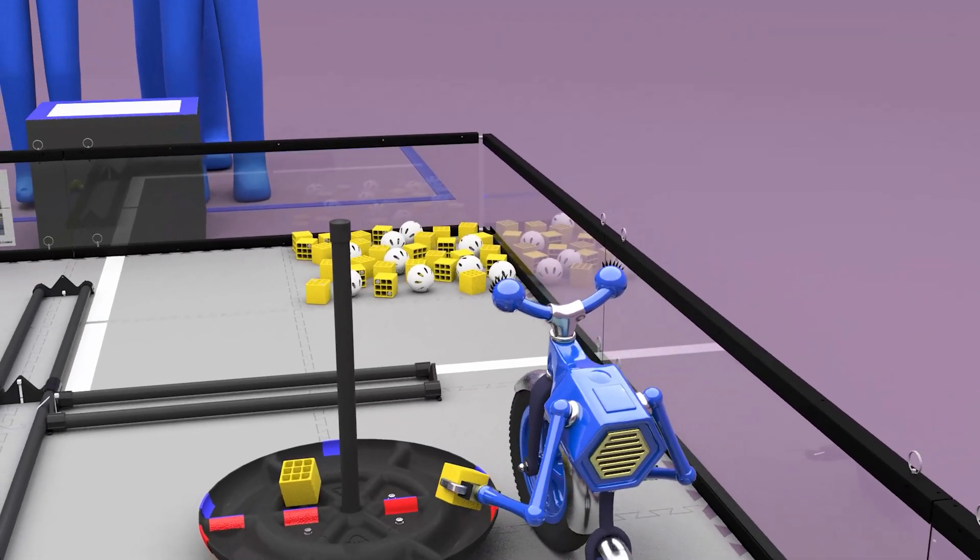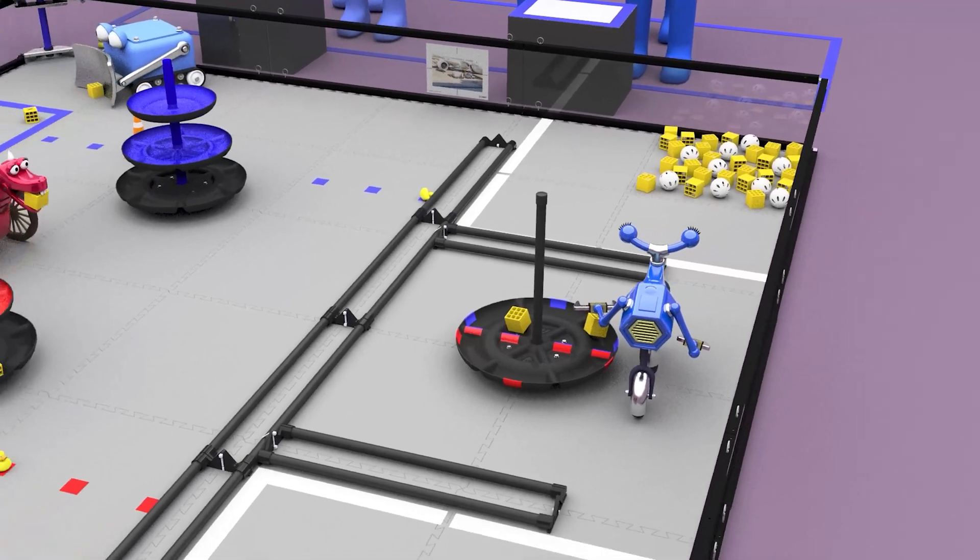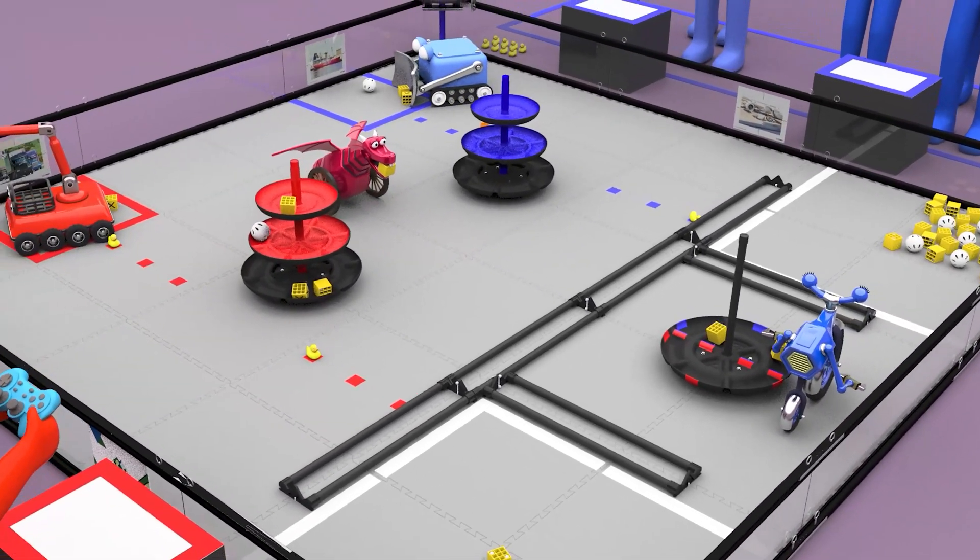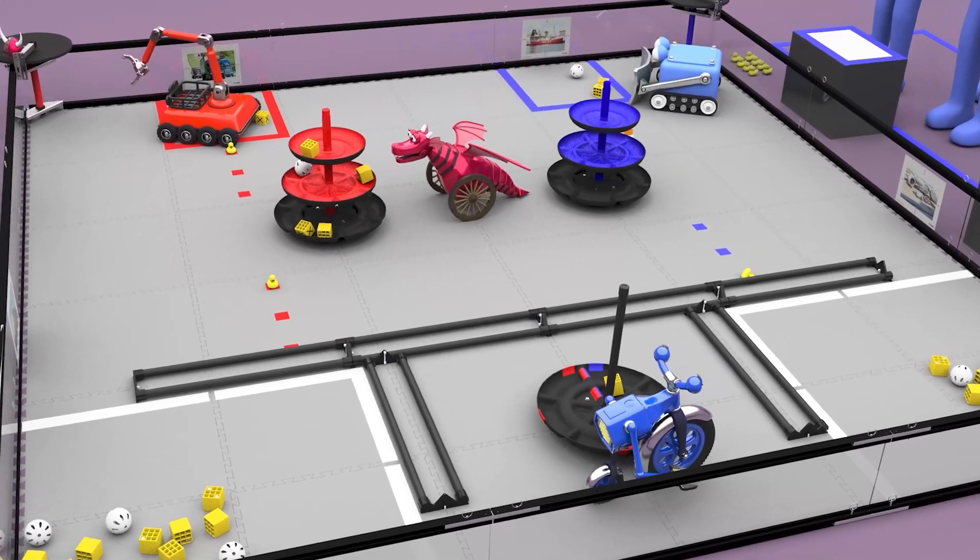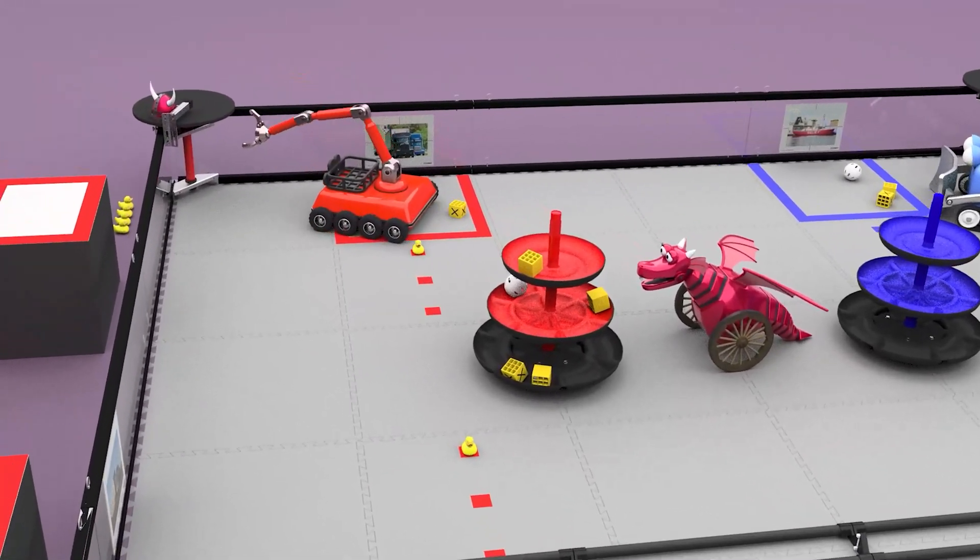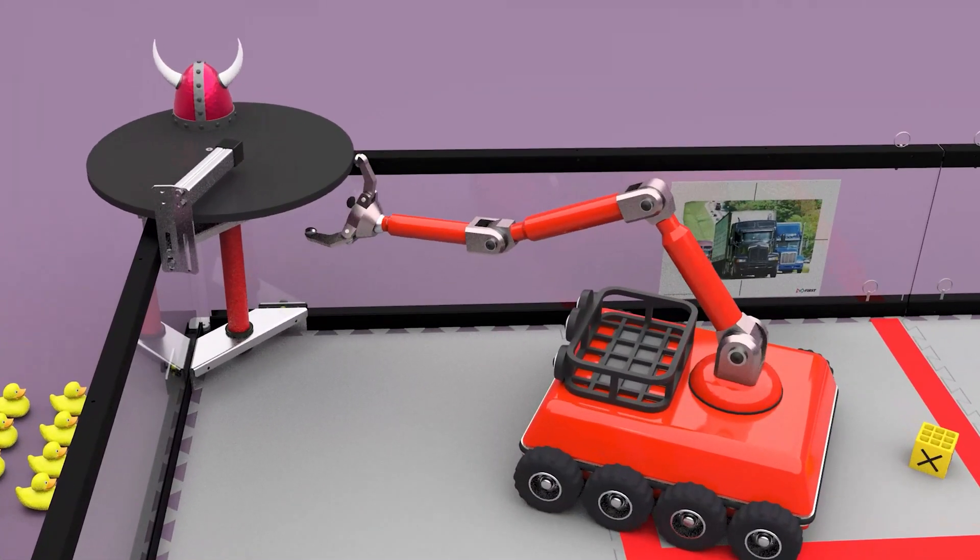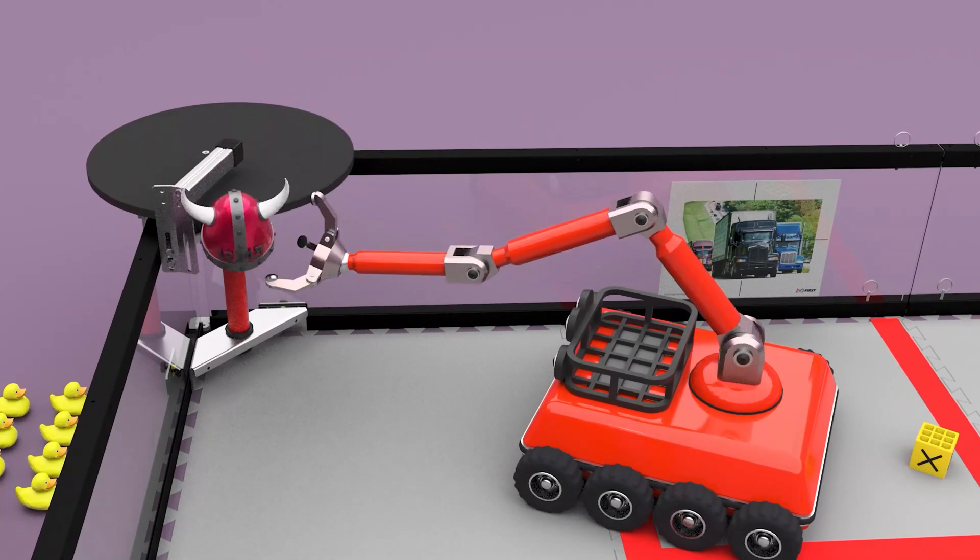The last 30 seconds of the driver control period is the endgame. Robots may continue scoring freight, and there are also ways to earn bonus points. Delivering a duck or shipping element to the floor earns the alliance six points.